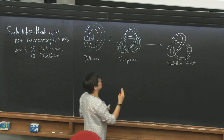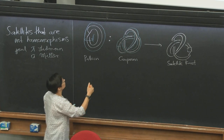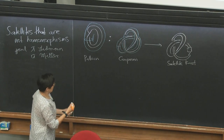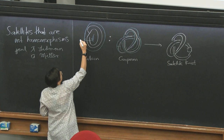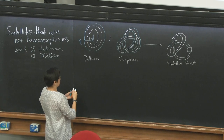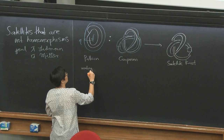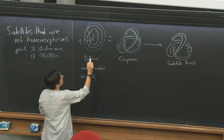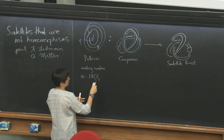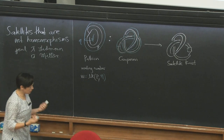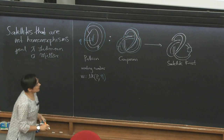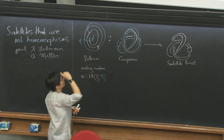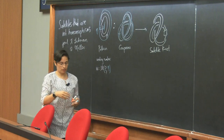We need some twists here because I want this operation to be untwisted, which means I want meridian to go to meridian, and also longitude to go to longitude. The winding number of my satellite operation is the linking number between the pattern P and the meridian — the boundary of a meridional disk. This is the definition, and this winding number is going to give me a lot of information about these functions.